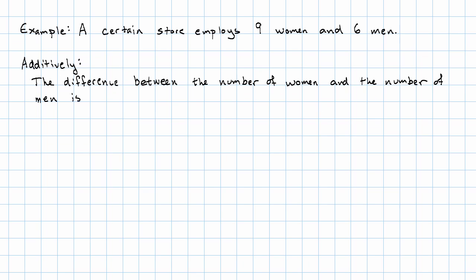we would say that the difference between the number of women and the number of men is nine minus six equals three. What we would say in English is: there are three more women than men.